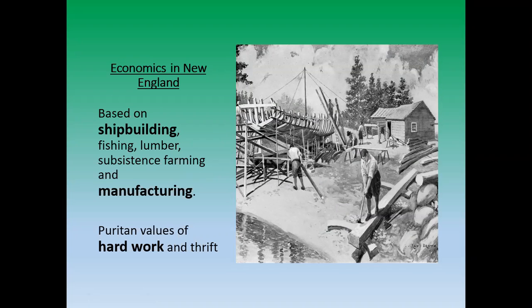And manufacturing. The farming is primarily because there's not a super amount of good farmable land in New England, in places like Massachusetts, Connecticut, Rhode Island, New Hampshire, and Maine. It's very rocky and a little more mountainous. There's not a lot of huge open flat land that's good to farm.